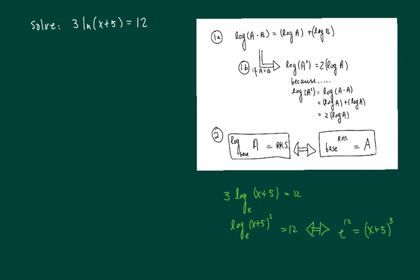Now if a is equal to b, as you can see, a squared, using the property we just discussed, that this 2, the hat position falls off in the front, becomes 2 times log a.